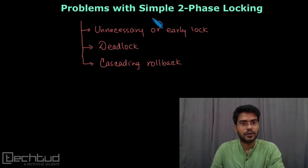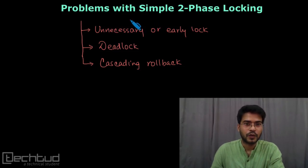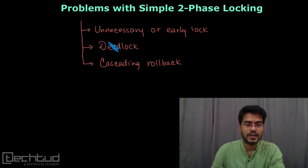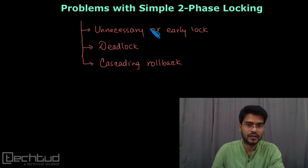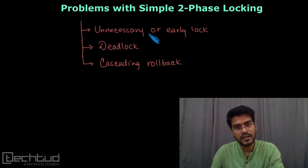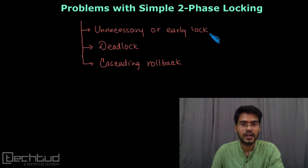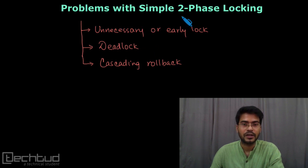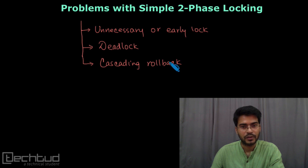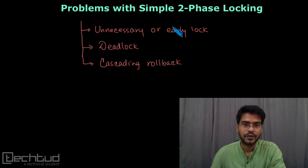Welcome back to techtrud.com. Let's understand the problems with simple two-phase locking. There are three problems: first, unnecessary or early lock which leads to less CPU utilization; second, deadlock, which may happen in this locking protocol; and third, cascading rollback, which may also occur when using two-phase locking protocol.